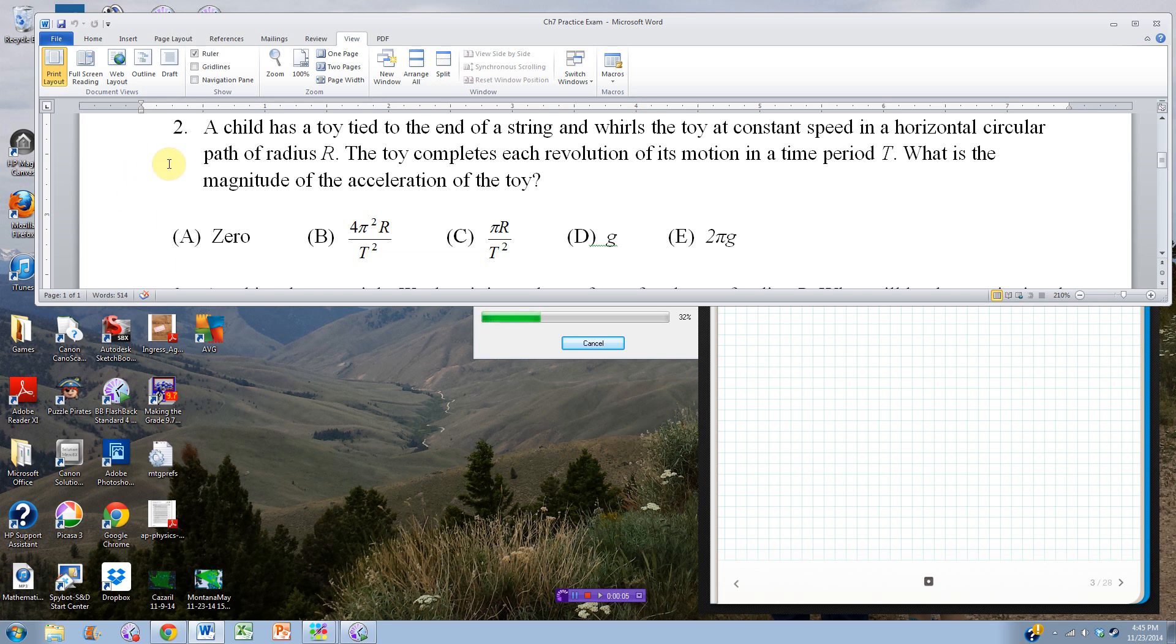Chapter 7, Practice Test Number 2, another multiple choice question. A child has a toy tied to the end of a string and whirls the toy at constant speed in a horizontal circular path of radius r. The toy completes its revolution of its motion in a time period t. What is the magnitude of the acceleration of the toy?